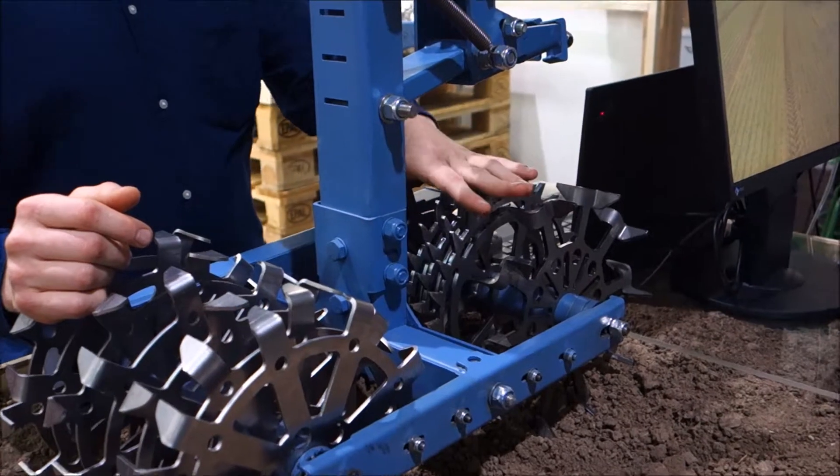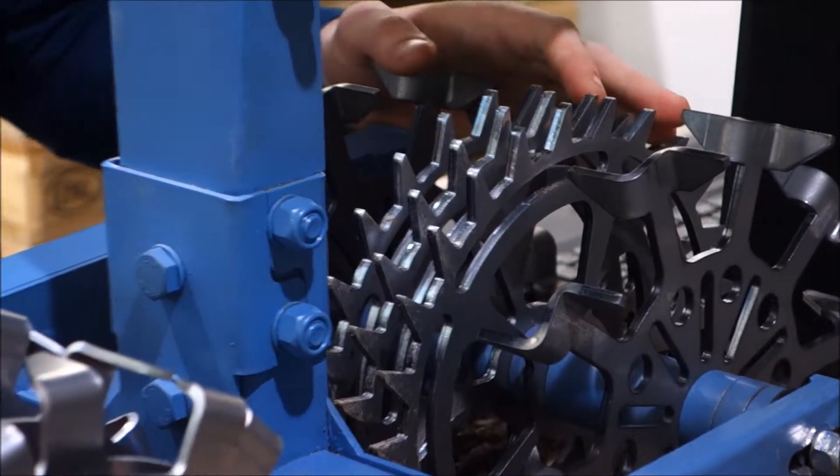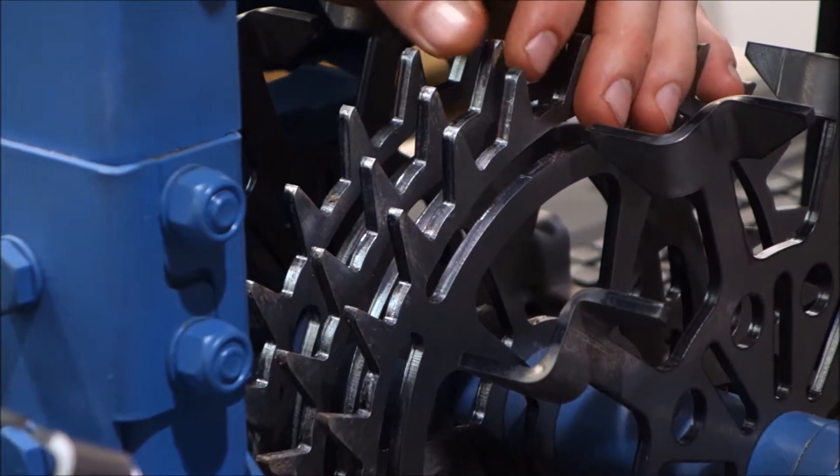With the front tool we are going in this direction. It's rotating, it's rolling and it's destroying the crust and clods of soil.